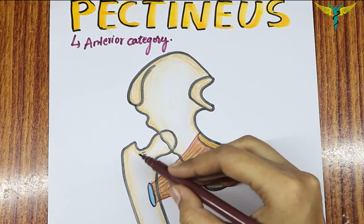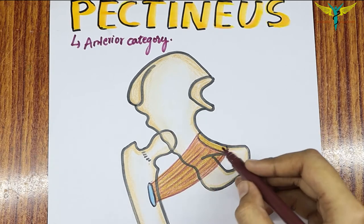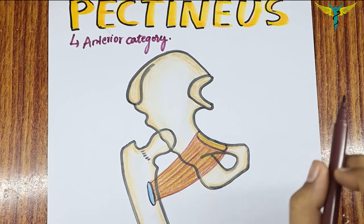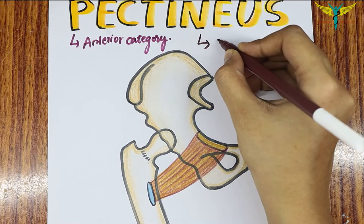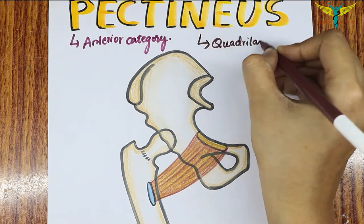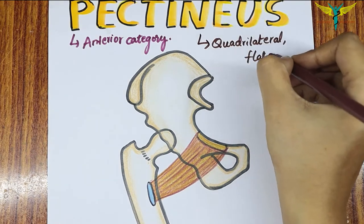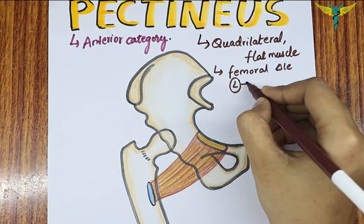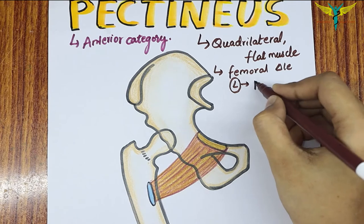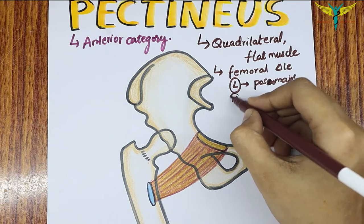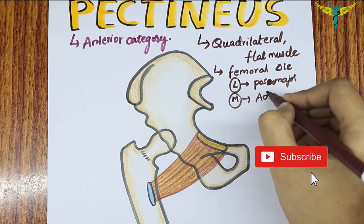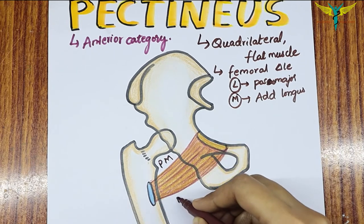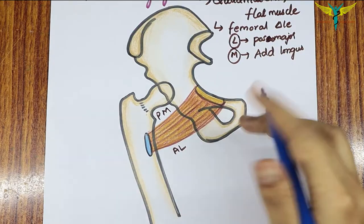The pectineus lies in the floor of the femoral triangle, between the iliopsoas major laterally and the adductor longus medially. To know about the adductor longus, you can click on the i button. Here will be the iliopsoas major muscle, and here will be the adductor longus.